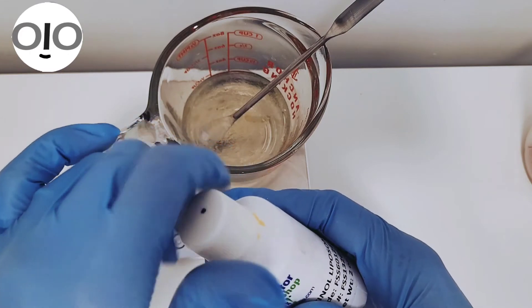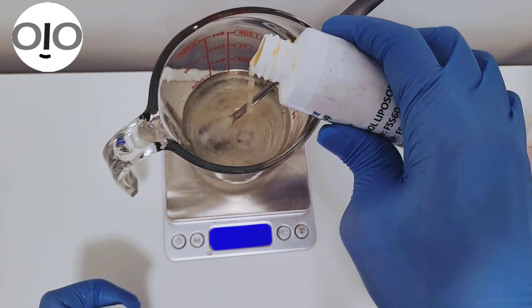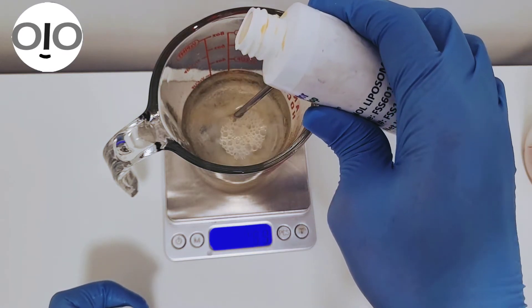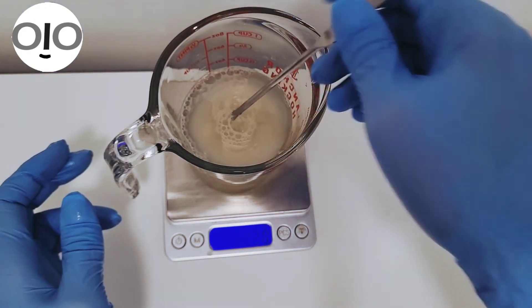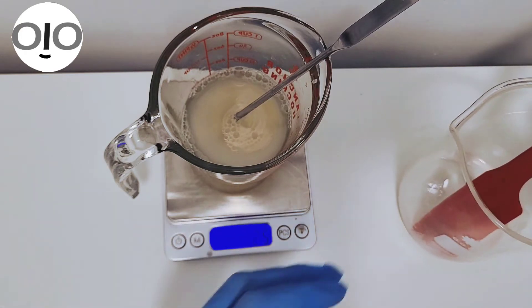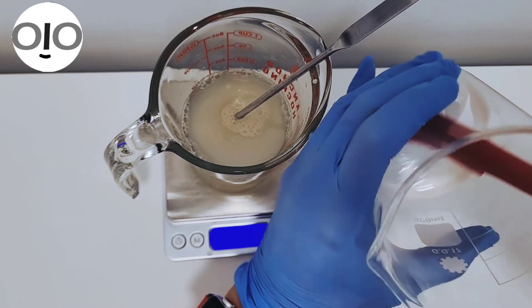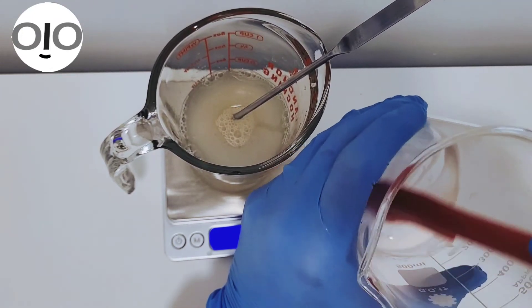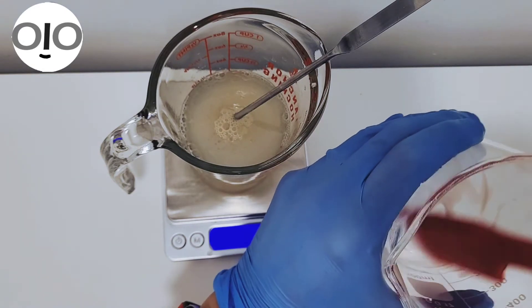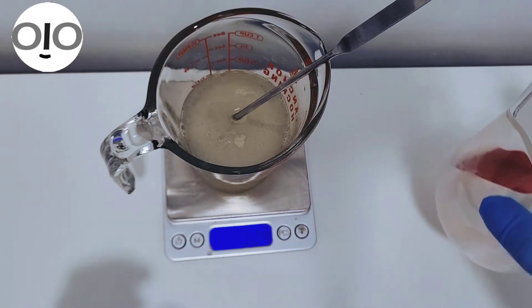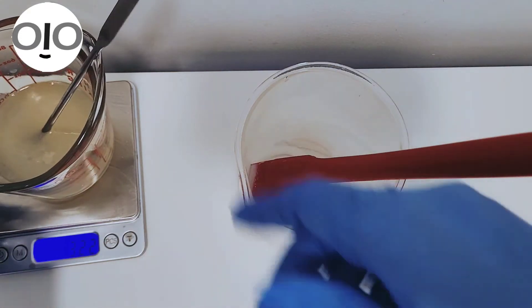Then I add my retinol. I have this retinol from Formulator Sample Shop and they mention that there is 10% retinol in it. When I add 3% of this ingredient to my formulation, I will have 0.3% final percentage of retinol. Please check your resources. If you are using 100% retinol, you have to go with a very lower percentage, something like 0.02 or 0.03. Then add the resveratrol phase and mix everything together.